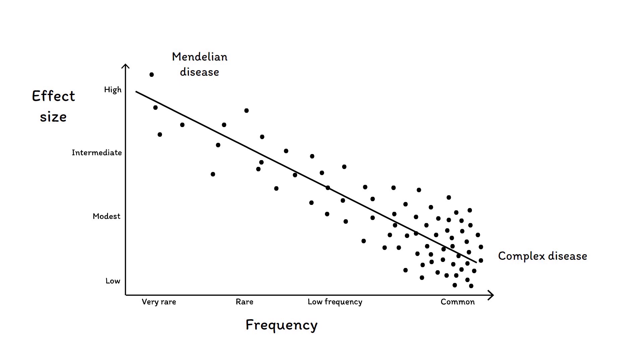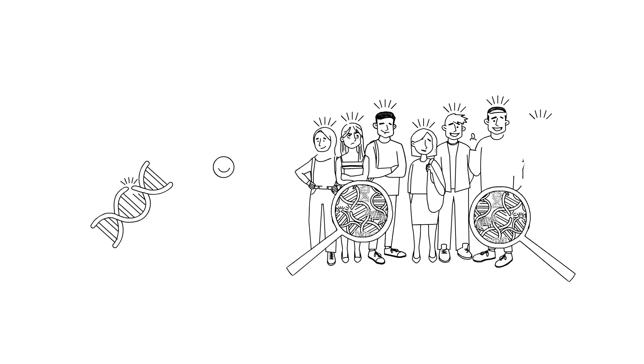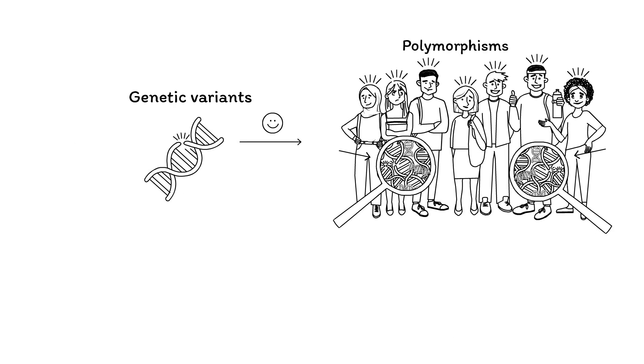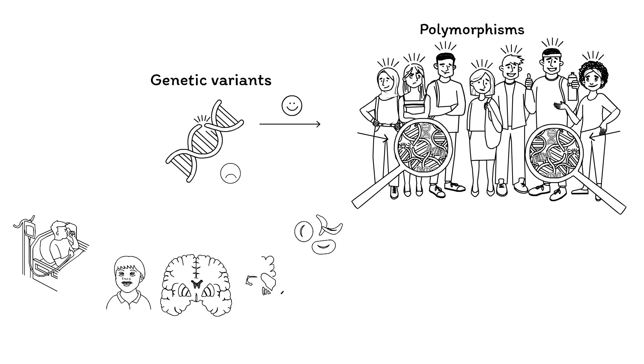We will further elaborate on this graph in the next videos, where we talk about how genetic variants are involved in different genetic diseases. For now, be aware that genetic variants have different biological effects and sometimes result in severe disease as they affect important sequences in the genome.